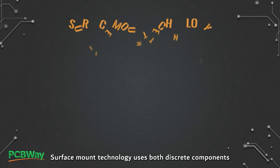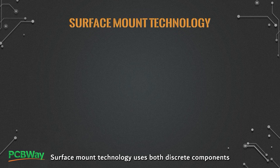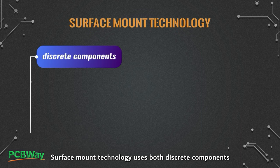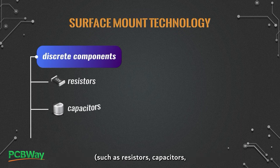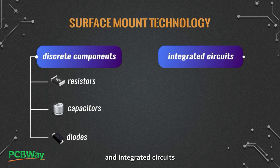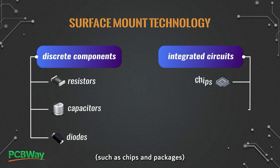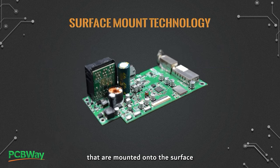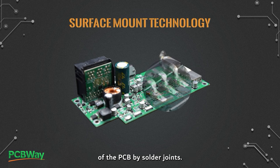Surface mount technology uses both discrete components such as resistors, capacitors, and diodes, and integrated circuits such as chips and packages, that are mounted onto the surface of the PCB by solder joints.